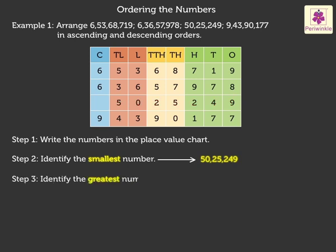Step 3. Identify the greatest number by comparing the digits in the crore's place. Here, amongst the digits 6 and 9 in the crore's place, 9 is the greatest digit. Hence, the greatest number is 9 crore 43,90,177.